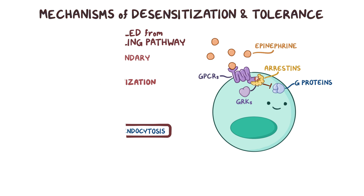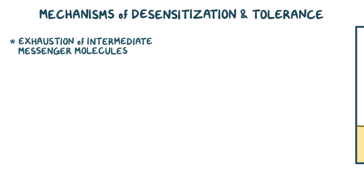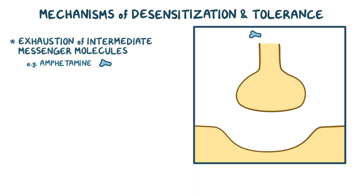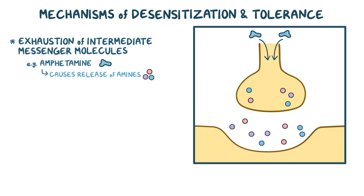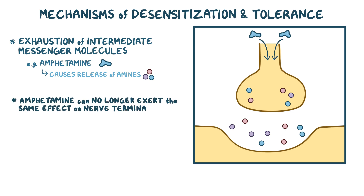In other cases, desensitization or tolerance arises from the exhaustion of intermediate messenger molecules. Take amphetamine, for example, which normally causes the release of amines like dopamine, serotonin, and noradrenaline from the nerve terminal into the synaptic cleft. Amine stores are limited, though, so continuous amphetamine use can lead to their depletion. As a result, amphetamine can no longer exert the same level of effect on nerve terminals with repeated use in quick succession.